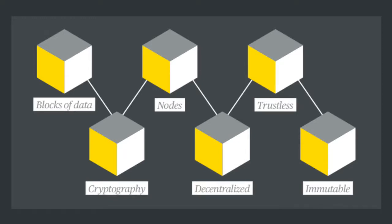The blocks of data are replicated on lots of different computers or nodes, and the ledger isn't managed by a single central authority like a bank. Instead, it's decentralized, meaning the nodes maintain a list of transactions and each node has a copy of the ledger. It's trustless — participants don't need to know each other and can transfer digital assets from A to B without the need for third-party verification, and all transactions are kept on the blockchain and never deleted.